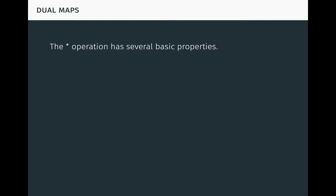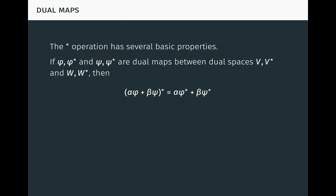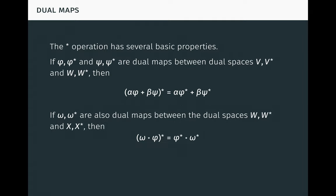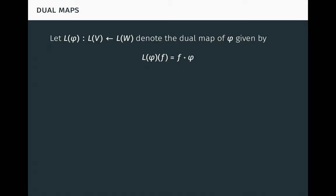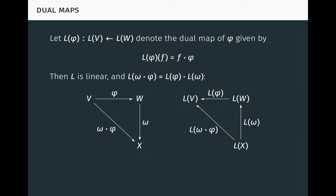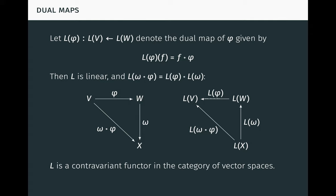The star operation has several basic properties. If phi, phi-star and psi, psi-star are dual maps between dual spaces V, V-star and W, W-star, then alpha phi plus beta psi has the dual alpha phi-star plus beta psi-star. If omega, omega-star are also dual maps between the dual spaces W, W-star and X, X-star, then omega after phi has the dual phi-star after omega-star. Note the order reversal here. Finally, if iota is an identity map, then so is iota-star. Now let L-phi to LV from LW denote the dual map of phi given by precomposition. These results show that L is linear and L reverses composites. Since L also preserves identity maps, it follows that L is a contravariant functor in the category of vector spaces. To learn more about functors, see my other videos about category theory.